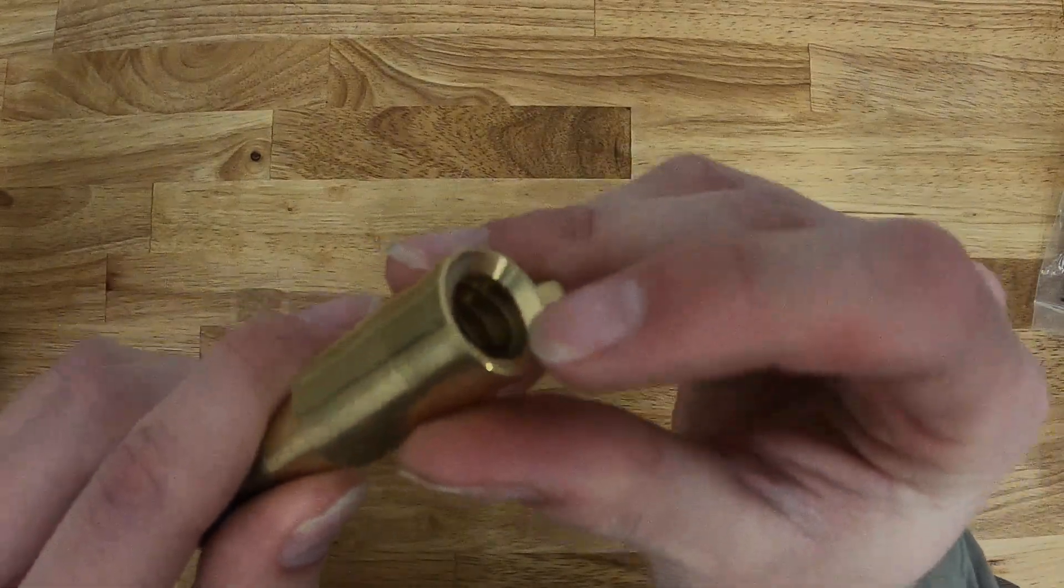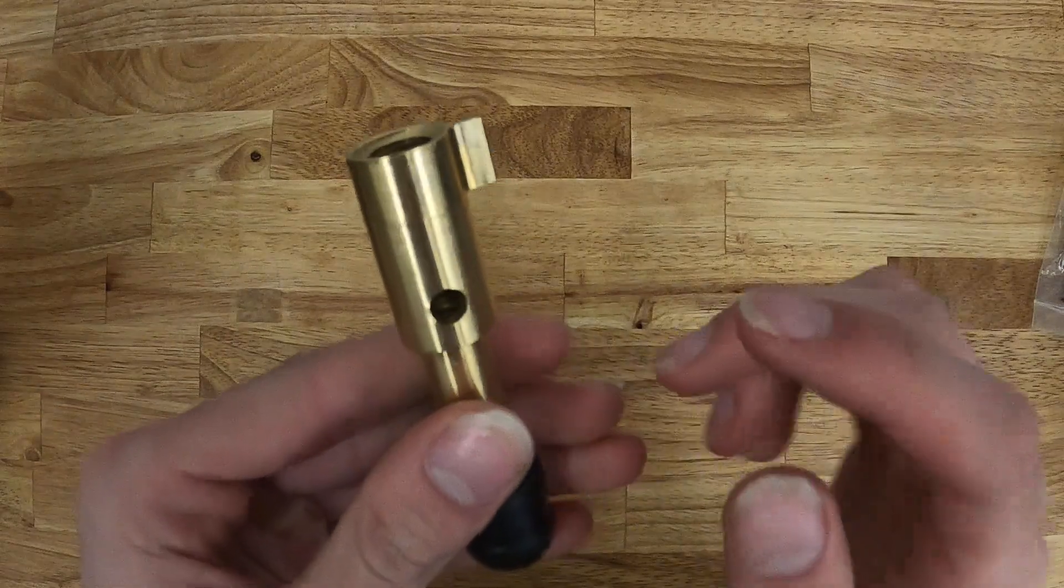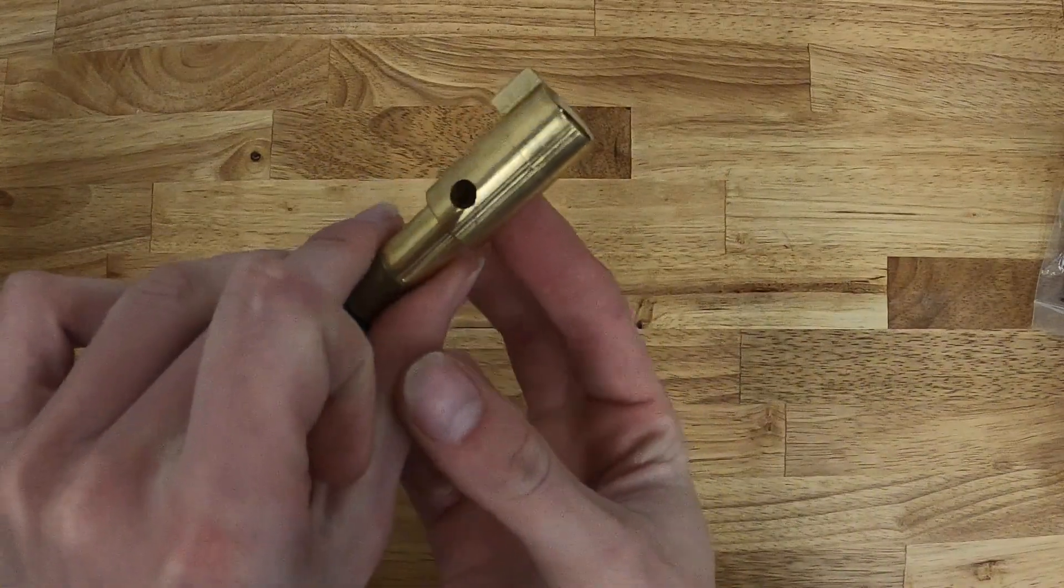You can see in here those internal female threads, as well as this little flange piece here, and then you'll have the two holes on each side here.